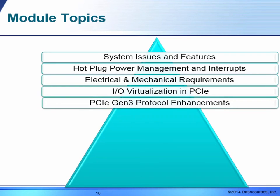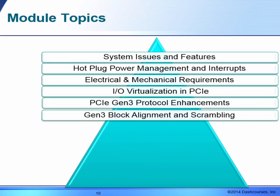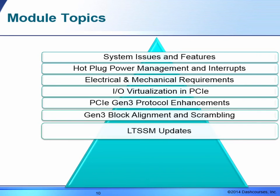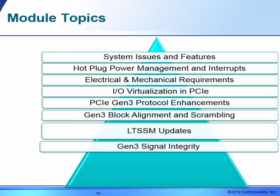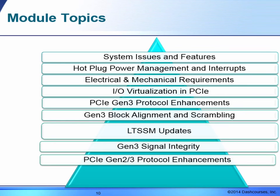We will look at the new enhancements to operate at 8 giga transitions per second, covering the Gen 3 protocol enhancements, block alignment and scrambling required in Gen 3, and a revision section on the LTSSM and updates needed for Gen 3. We will also have an overview of Gen 3 signal integrity and mitigations for the challenges posed at 8 giga transitions per second.